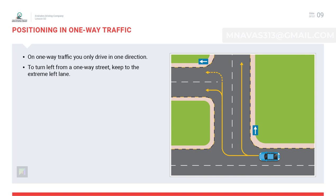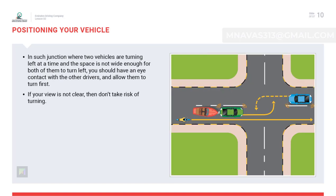Positioning in one-way traffic: if you intend to change direction in a short distance, position your vehicle in the correct lane well in advance. If you intend to continue straight, join the extreme right lane. At junctions where two vehicles are turning left at the same time and the space is not wide enough for both, make eye contact with the other driver and allow them to turn left first. If your view is not clear, do not take the risk of turning.